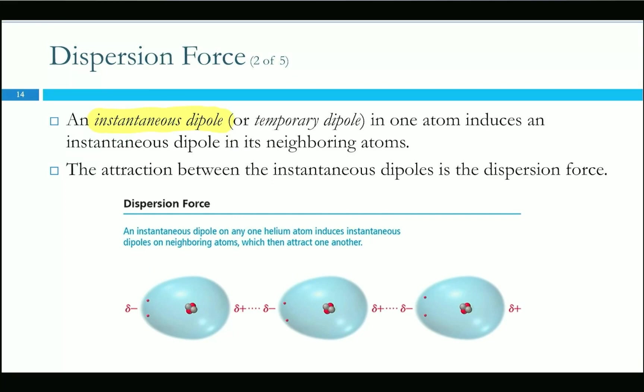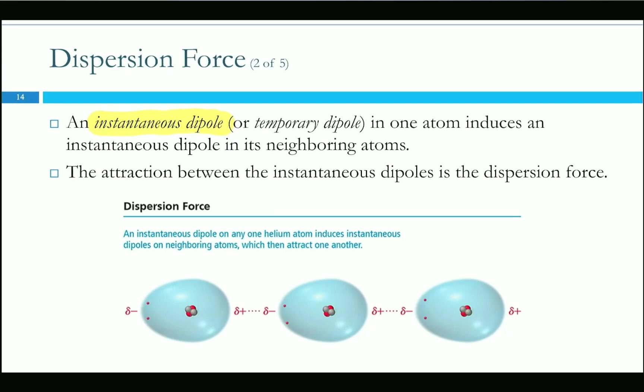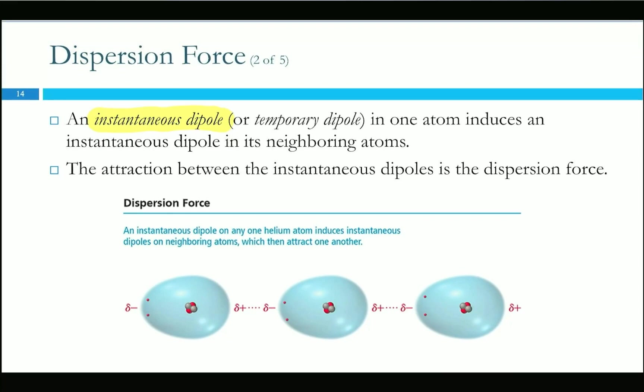Those electrons moving around cause charges to be unevenly distributed — we call that an instantaneous dipole. It can also induce a dipole in an adjacent atom. If the far-right atom's electrons are on the left side, the center atom's electrons move away from that negative charge and get pushed to the left. In the next instant they might be pushed right or be evenly distributed again. It's instantaneous.